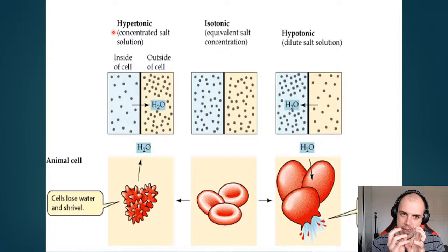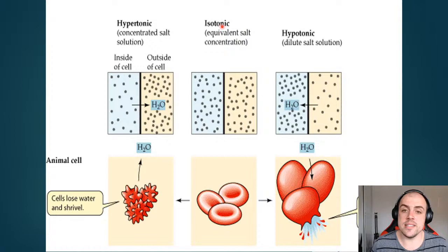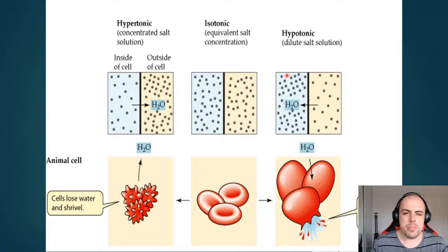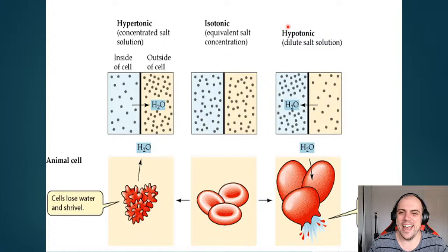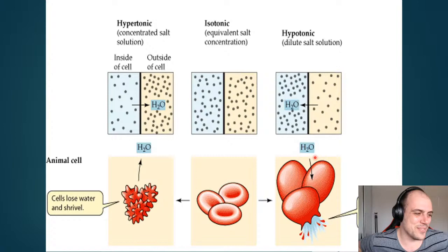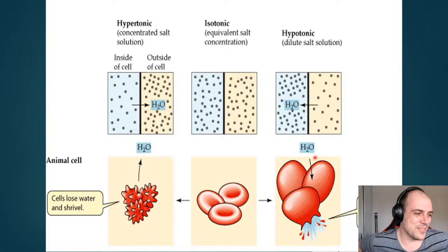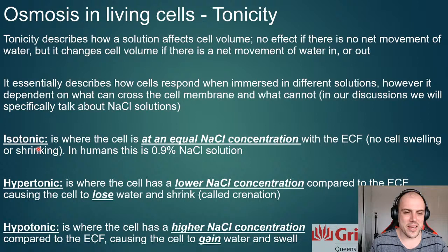Summary: hypertonic — the cell shrinks because water is pulled out. Isotonic — equivalent salt concentration, equal net movement in and out. Hypotonic — higher salt concentration inside the cell, so water rushes in. A personal memory trick: hypotonic reminds me of hippos — hippos are big and round, so hypotonic gives you big round cells. That's our three main tonicities: isotonic, hypertonic, and hypotonic.